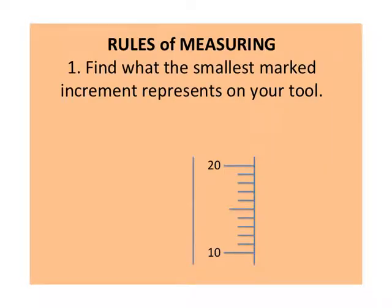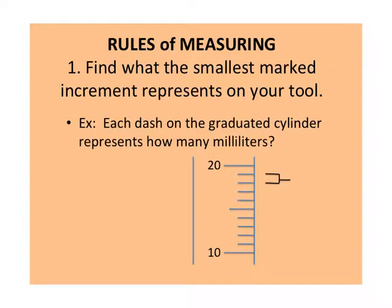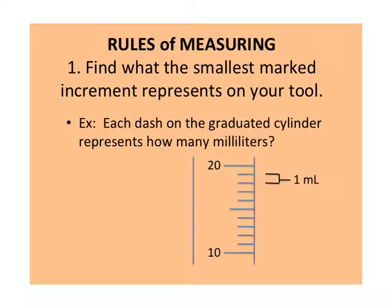The first rule of measuring is that you need to figure out what the smallest marked increment represents on your tool. When I say increment, I'm talking about the spacing — what does each line represent? So for example, on this graduated cylinder, each line represents one milliliter in volume.